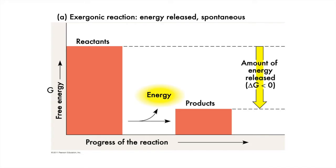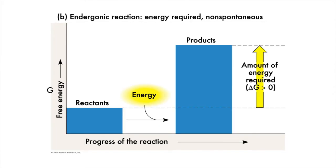If we consider a graph showing the Gibbs free energy of the reactants and products for a spontaneous reaction, we see that the products have less Gibbs free energy than the starting reactants. The amount of energy released in this process is the change in Gibbs free energy, or delta G. In an endergonic reaction, the reactants have less potential energy than the products, and an investment of energy is required.